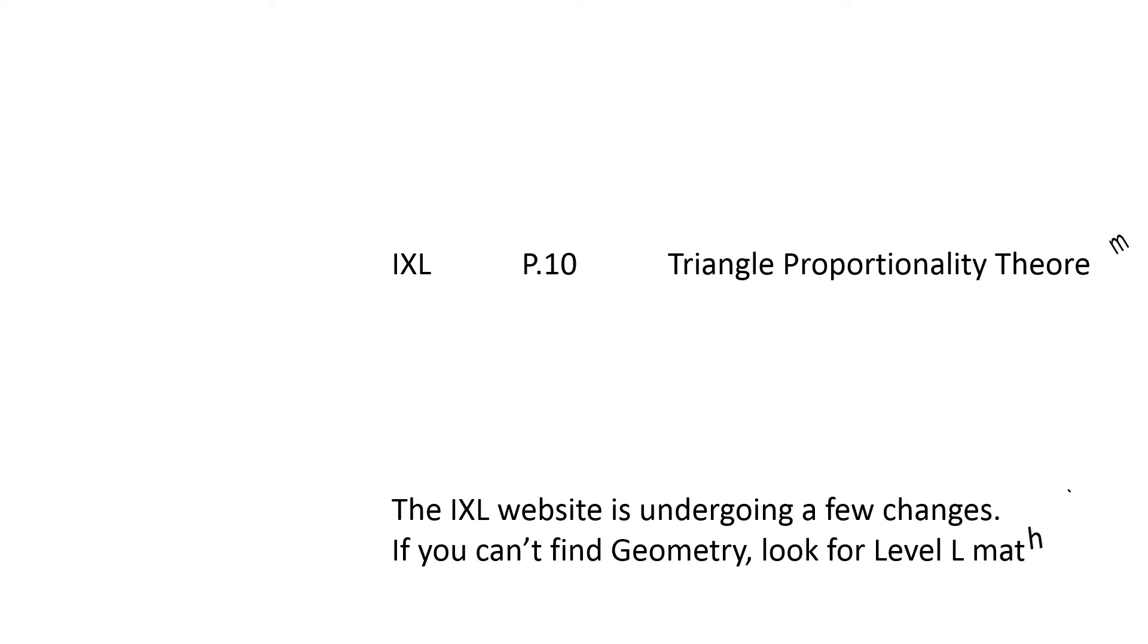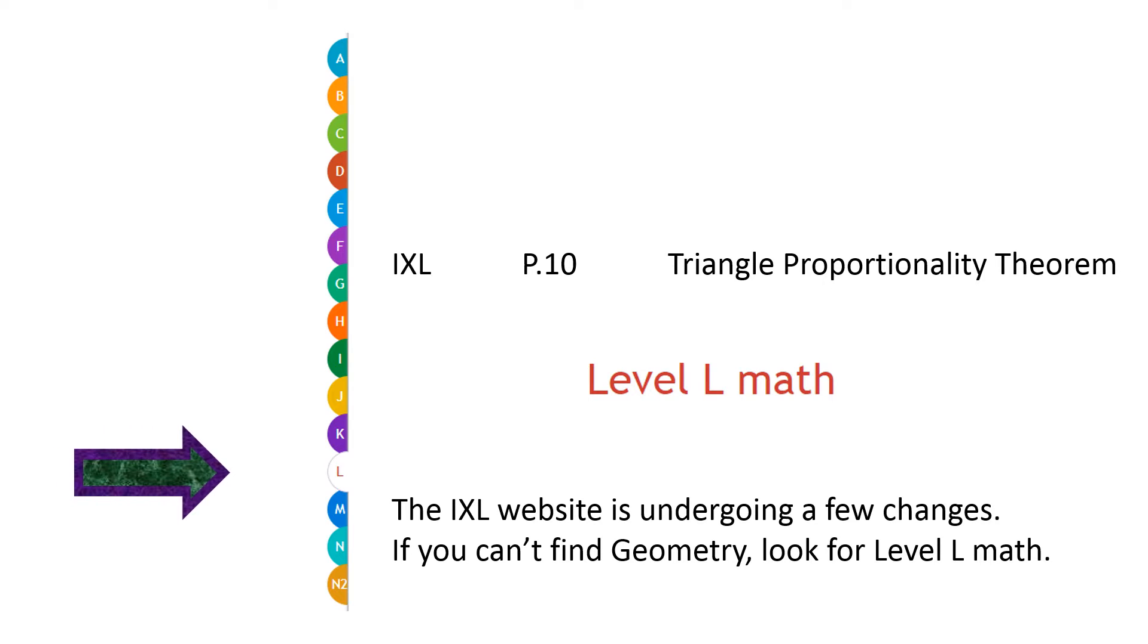Now this is a little bit crazy. When I logged into IXL, I noticed that instead of finding a tab for geometry, I found a tab that says level L math. If you log on to IXL and it says geometry, that's fantastic, just go ahead and go there. But if you cannot find a tab that says geometry, for whatever reason they've decided that we are level L.